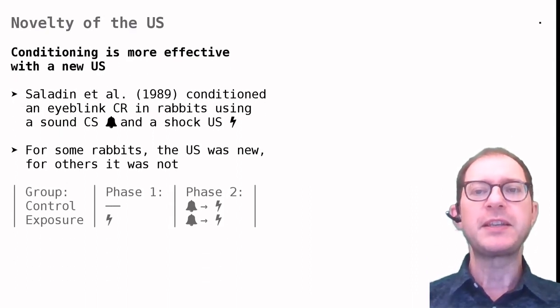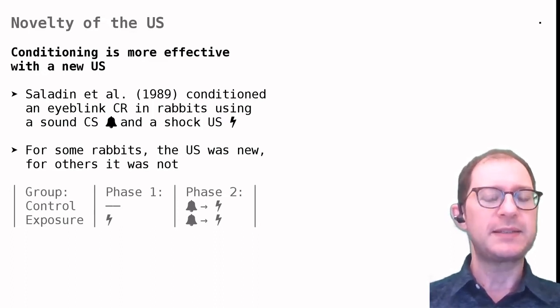Something similar happens if it's the US rather than the CS that is not new. The table shows the design of another experiment on rabbit eyeblink conditioning, performed by Saladin and colleagues. As you can see, the design is very similar to that of the previous experiment. The only difference is that the exposure group experiences the US rather than the CS.